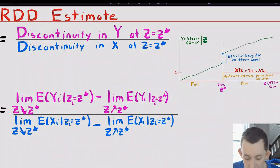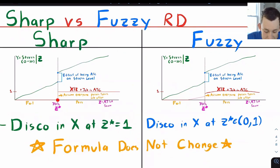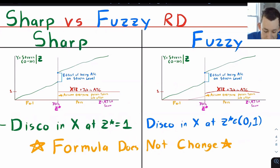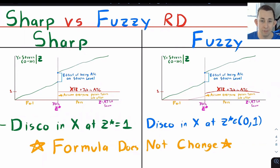In our example, everyone who passes the ATSA gets an offer and everyone who gets an offer takes the job. So the jump in treatment at the threshold goes exactly from zero to one — everyone went from not being to becoming an air traffic controller right at the threshold. We call that a sharp RD, because treatment goes exactly from zero to one right at the threshold. If we relax some of those assumptions, we get to a fuzzy RD.